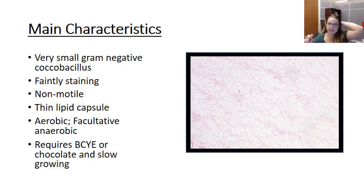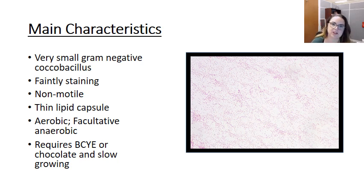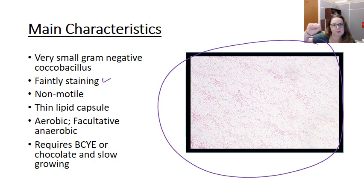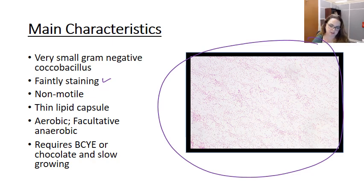So, main characteristics. First off, this is a very, very small gram-negative coccobacillus. I almost hesitate to ascribe it a shape name because, as you can see here in this image, it is very small and also very faintly staining. Coccobacillus really means that it's pleomorphic — it can be spherical or rod-like and anywhere in between the two.